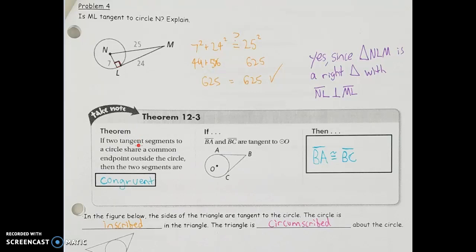Our next theorem states: if two tangent segments to a circle share a common endpoint outside the circle, those two segments are congruent. For example, if point B is outside the circle and both AB and BC are tangent segments to the circle, then by this theorem the length of AB equals the length of BC.